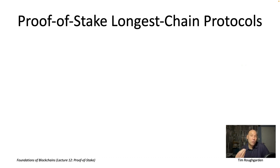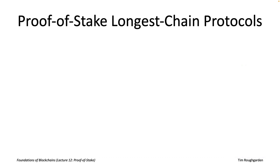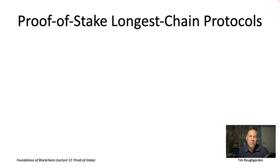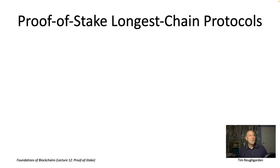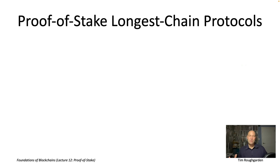Getting proof-of-stake longest chain consensus to work is actually a hard and quite interesting computer science problem — it's fertile ground for cool research papers. For all of these reasons, it's worth spending a little time talking about proof-of-stake longest chain protocols. It's instructive to see just how non-trivial it is to try to turn Bitcoin into a proof-of-stake protocol; you really cannot just use proof of stake as a drop-in replacement for proof of work in Nakamoto consensus.